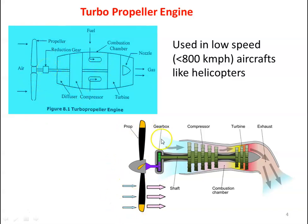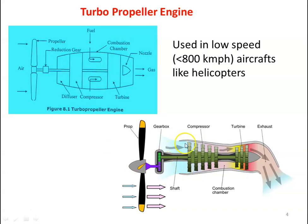The main components are the propeller, which is connected to the main shaft by using a reduction gearbox. At the entrance we have a diffuser, then the compressor, then the combustion chamber where burning of fuel takes place, then the turbine, and then the nozzle. In the cross-sectional diagram we have the diffuser first, then the compressor, then the combustion chamber, turbine, and exhaust nozzle.